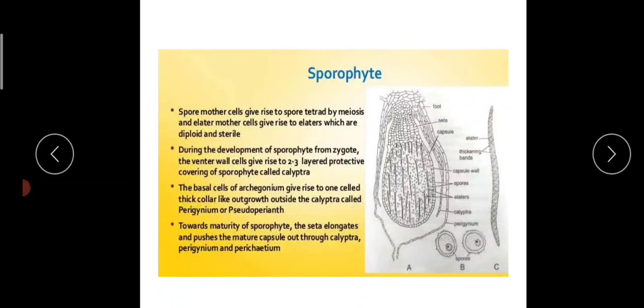Fertilization happens and sporophyte is formed. Then this sporophyte ruptures and dehisces the spores outside. The spores come outside and under favorable conditions they germinate to form again the gametophyte. The next generation is formed, and this cycle continues. This is how the life cycle of Marchantia is completed.